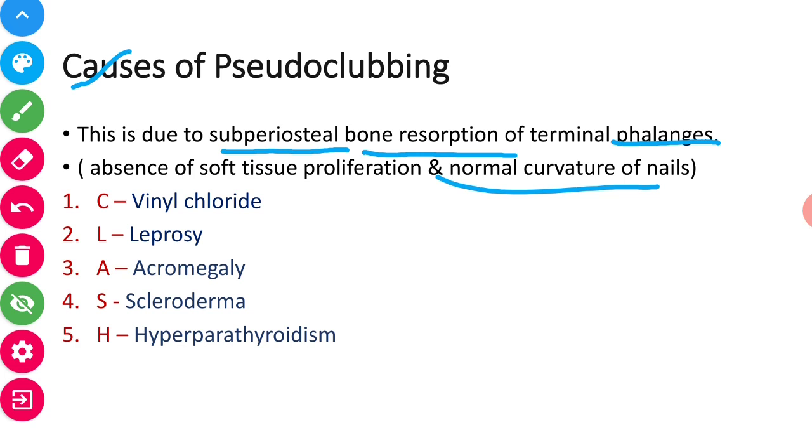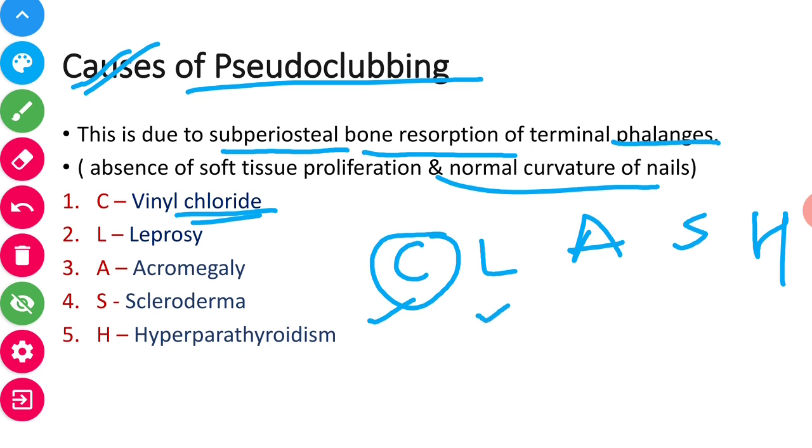So now causes of pseudoclubbing - we have a mnemonic that is CLASH. C for vinyl chloride, L for leprosy, A for acromegaly, S for scleroderma, and H for hyperparathyroidism. These are the causes of pseudoclubbing.